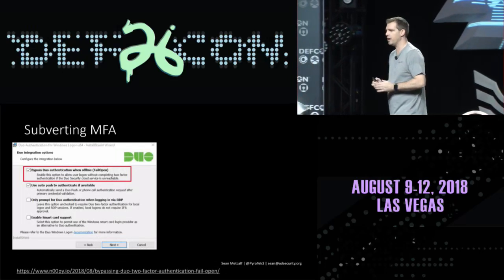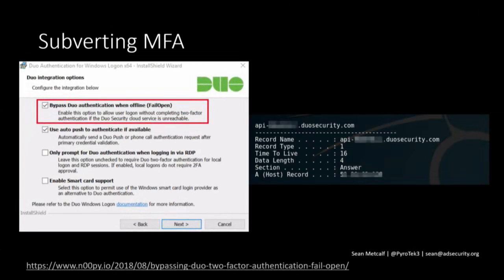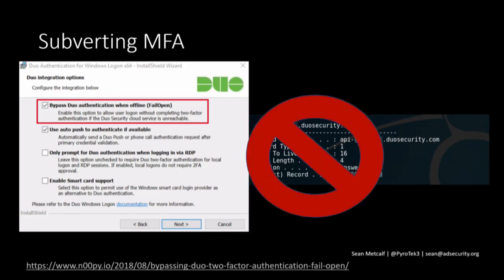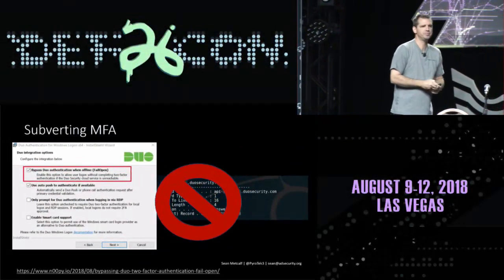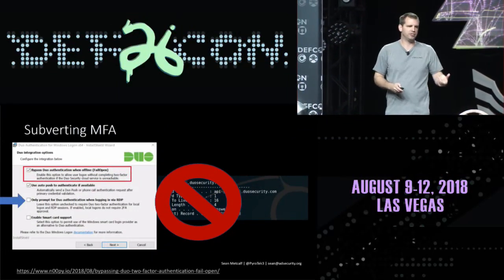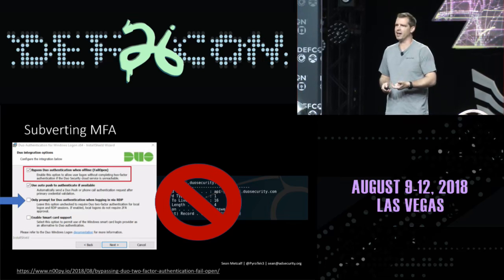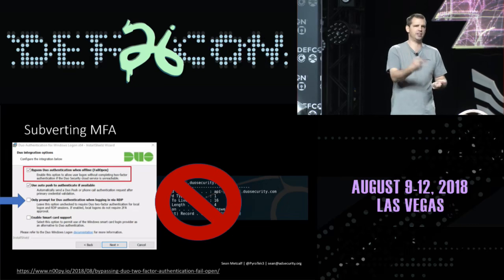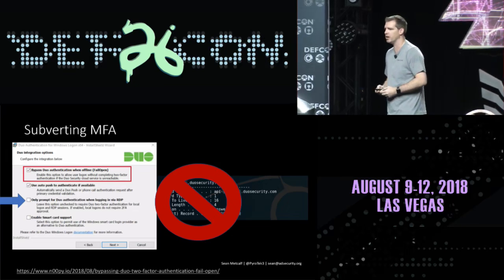Another interesting thing about Duo: it fails open. For Duo to work, it connects to an API record at duosecurity.com. If we block that communication, there's no MFA at all. Also, if we change a registry default — if we have access to the registry — we can actually turn off MFA for local accounts, so we can connect using just username and password through RDP. There's also the onboarding process: you go to a website, click a request, get an email, and MFA gets set up. If we've compromised that account, we can filter or delete that email and add additional devices for MFA.